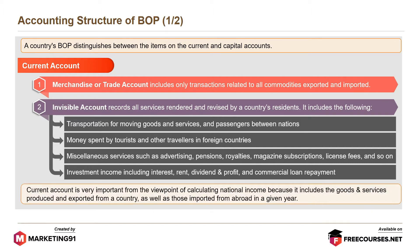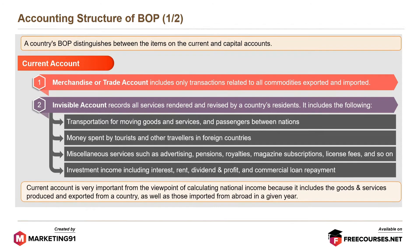The current account is very important from the viewpoint of calculating national income, because it includes the goods and services produced and exported from a country as well as those imported from abroad in a given year.